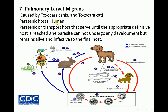In the paratenic host, the parasite cannot undergo any development to any other stage, but remains alive and infective. The parasite can't develop further but stays infective to the next host.